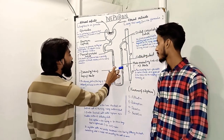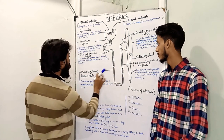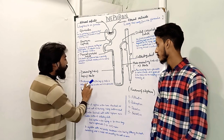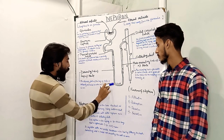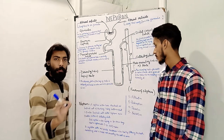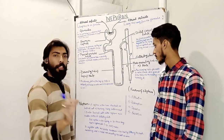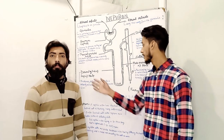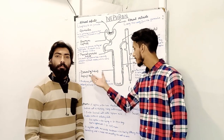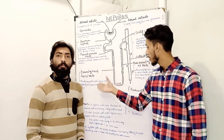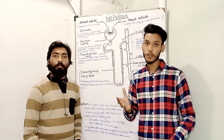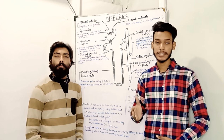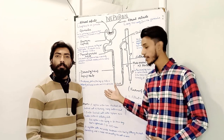This descending part of the nephron is called the descending limb of the loop of Henle. The descending portion of the loop of Henle is extremely permeable to water and less permeable to ions, meaning water moves out more readily while ions are retained.